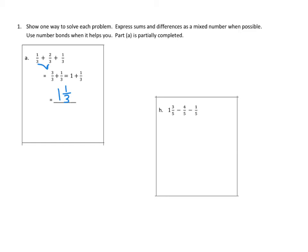So let's take a look at part H over here, a more difficult problem, and see if we can make sense of that and solve it in one of our ways. We have one and three-fifths, minus four-fifths, minus one-fifth. One thing that we could do is we could use a number bond to break one and three-fifths into parts. We're working in fifths, so our one whole is the same as five-fifths, and we still have three-fifths left over. So that is the same as eight-fifths.